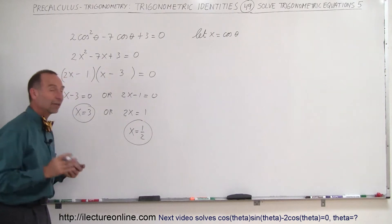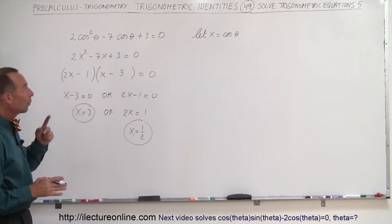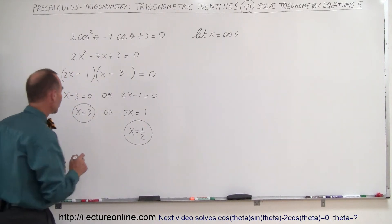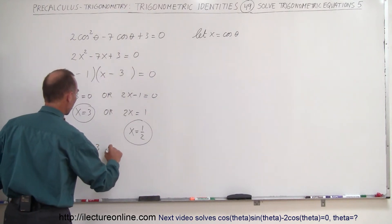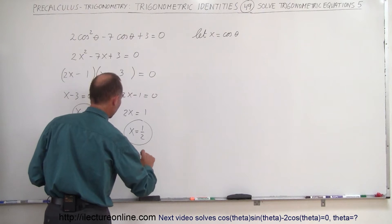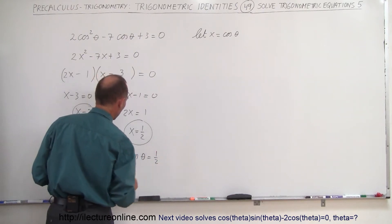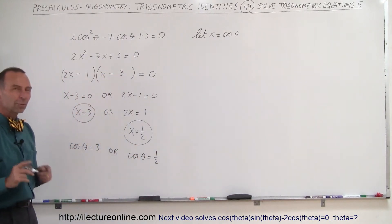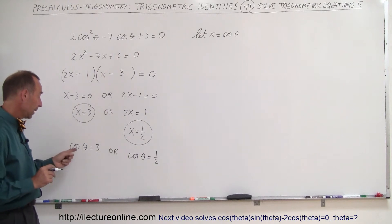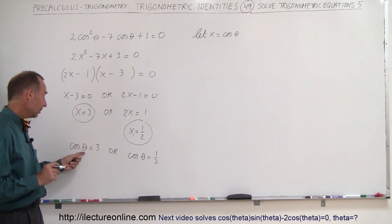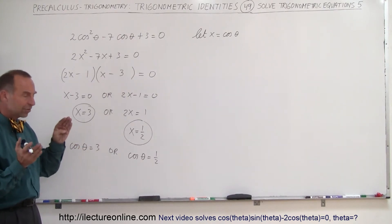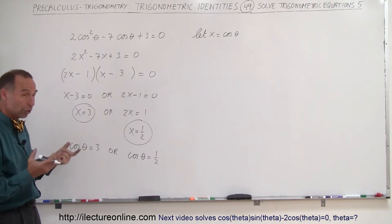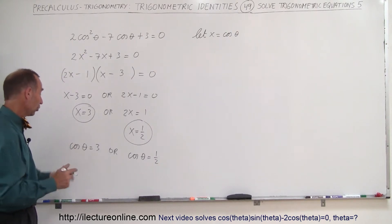All right, so now we can go ahead and substitute back in. So now we let x equal cosine of theta, which means that the cosine of theta is equal to 3, or the cosine of theta equals 1 half. Well, right away, here we realize we have a problem. There's no such thing as an angle that when I take the cosine of it, I have a value that's greater than 1 or less than negative 1, because the bounds here has to be plus 1 and negative 1 in the unit circle, which means there's no solution to that.